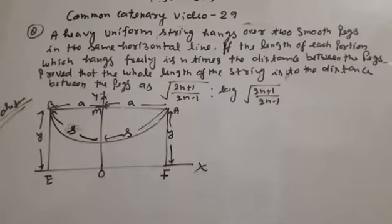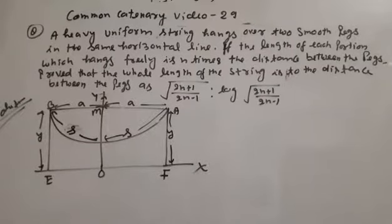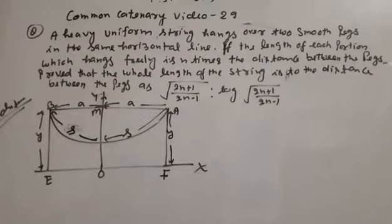Question A: A heavy uniform string hangs over two smooth pegs A and B in the same horizontal line. If the length of each portion which hangs vertically is n times the distance between the pegs, prove that the whole length of the string to the distance between the pegs is in the ratio (2n+1)/(2n-1) · log√((2n+1)/(2n-1)).